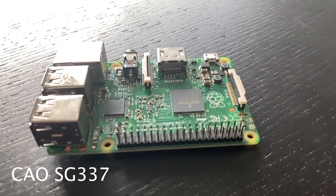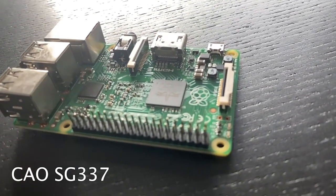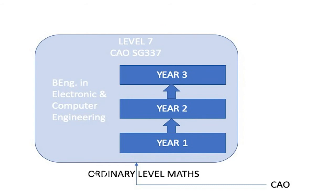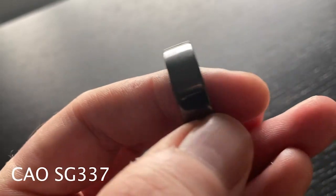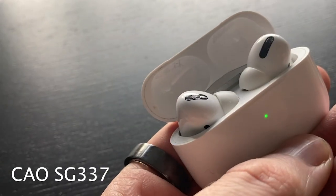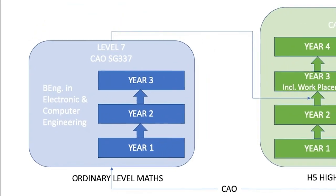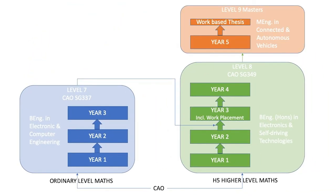If you are interested in technology or engineering but are not doing higher level maths, why not consider our level seven in Electronic and Computer Engineering. This is a three-year program that looks at the design and development of embedded electronic systems - these are the medical devices that keeps us healthy, the consumer devices that keeps us entertained, or the controlled systems that keeps us safe on the road. You can then progress on to the level eight in Electronics and Self-Driving Technologies and from there to the masters. Check out the link below for more information.